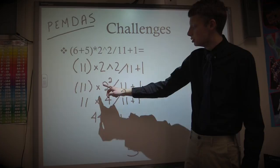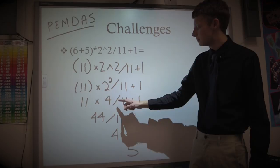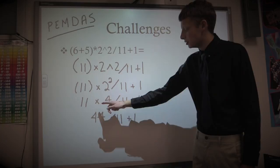Now, if you remember the order of PEMDAS, exponents comes next. So, you're going to square the 2 next. That'll give you 11 times 4, divided by 11 plus 1.